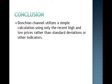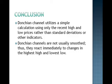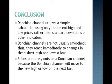Donchian channel is different from Bollinger Bands because it employs a simple calculation using only the recent high and low prices, rather than standard deviations or other indicators. Donchian channels are not usually smoothed, so they tend to react immediately to changes in the highest high and lowest low. Prices will rarely be outside a Donchian channel, even during a breakout of a price range, because the Donchian channel will move to the new high or low on the next bar.